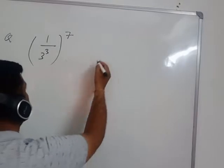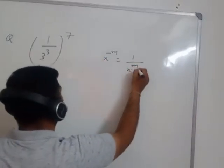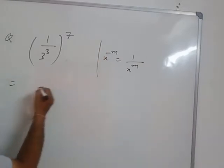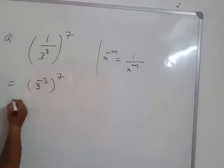Like this, you know x power minus m can be written as 1 by x power m. If you apply this rule here, you can write here 3 power minus 3 and raise to power 7.